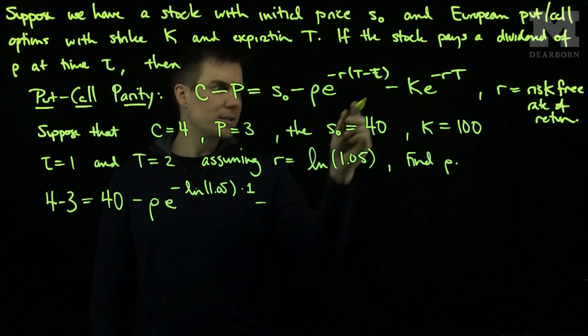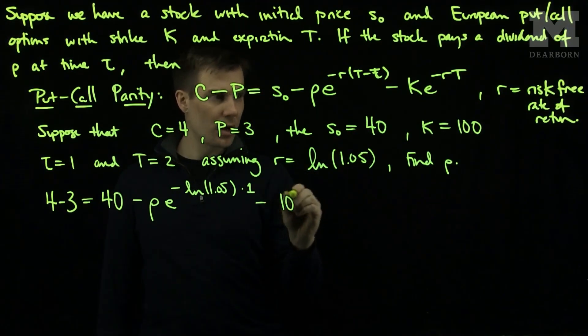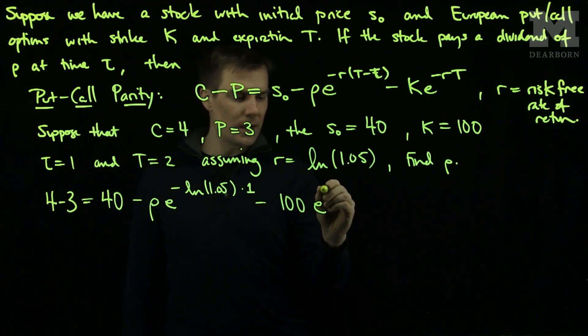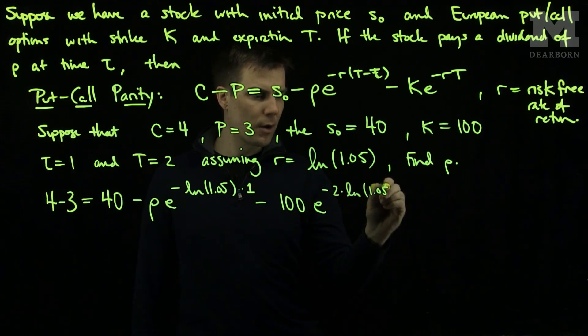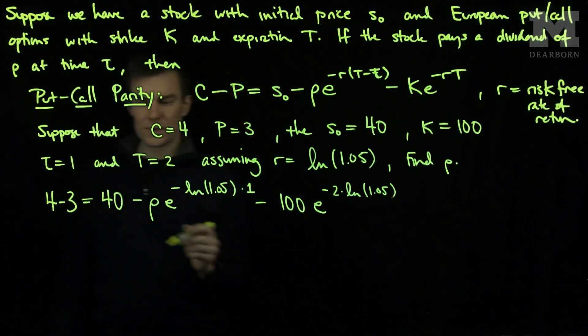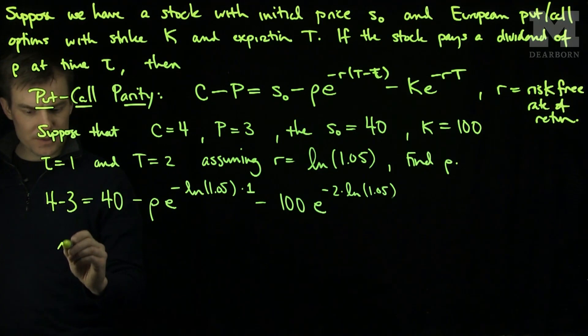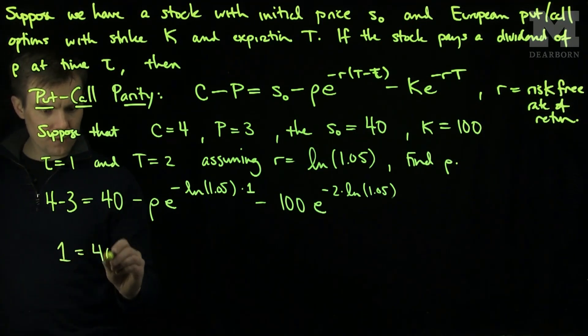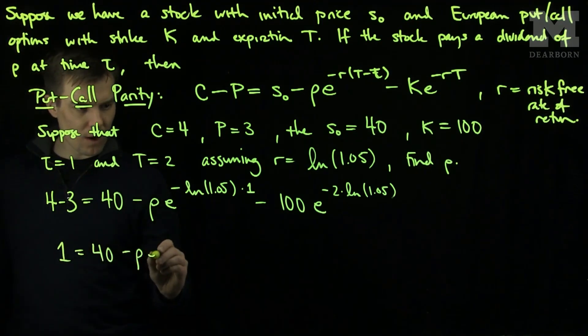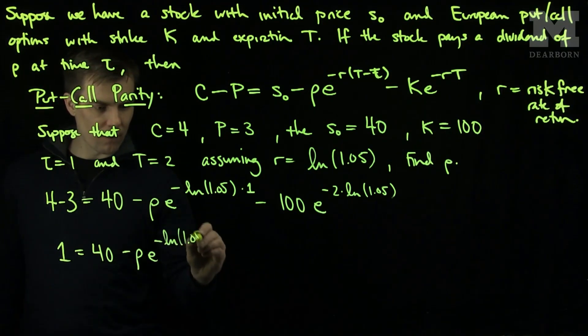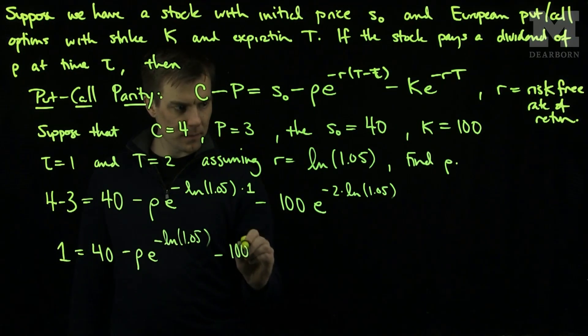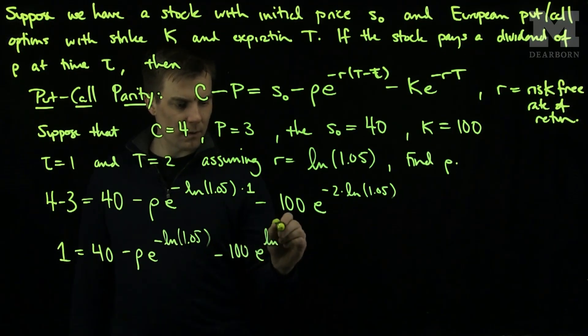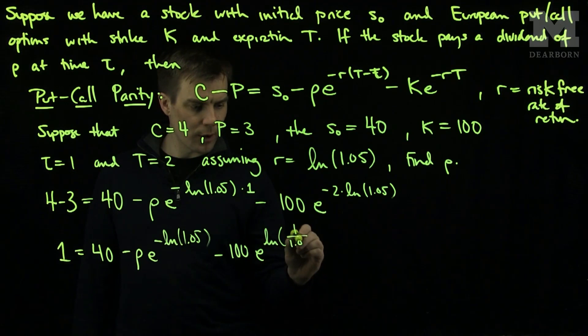And then I have minus the strike price, 100, times e to the negative 2 times the log of 1.05. So if we simplify this, we see that 1 equals 40 minus rho e to the negative natural log of 1.05 minus 100 e to the log of 1 over 1.05 quantity squared by properties of logarithms.